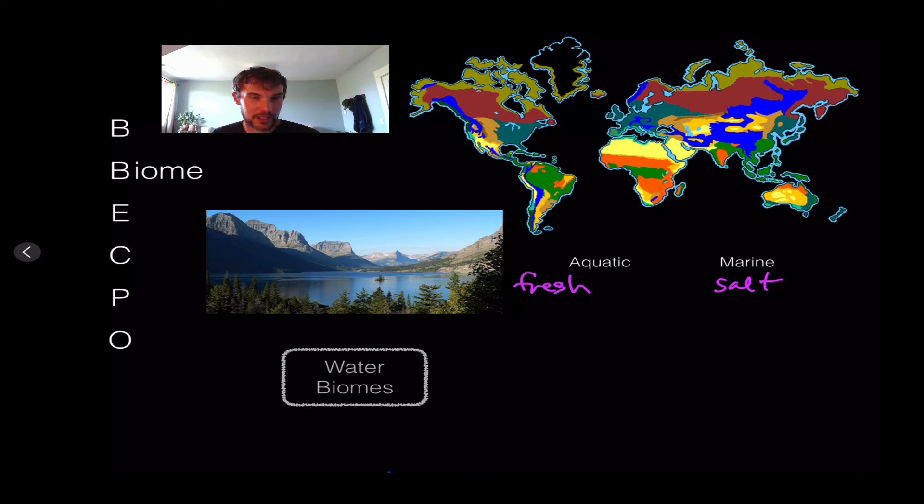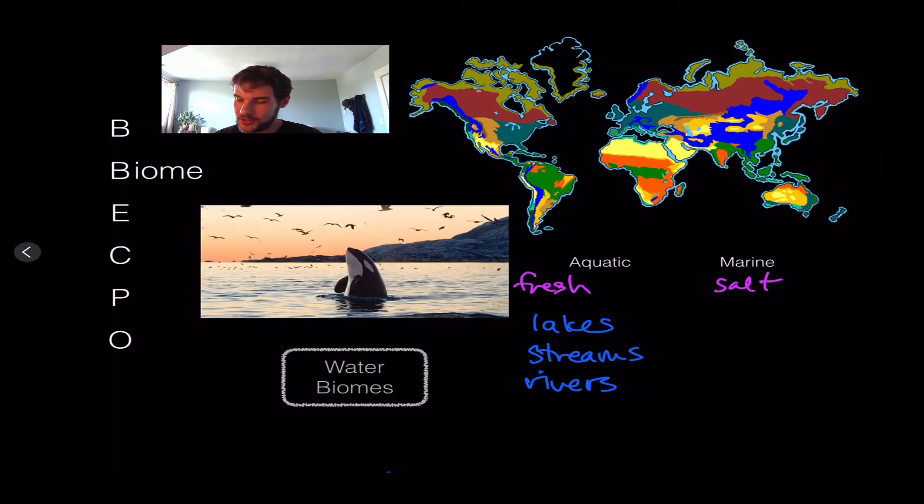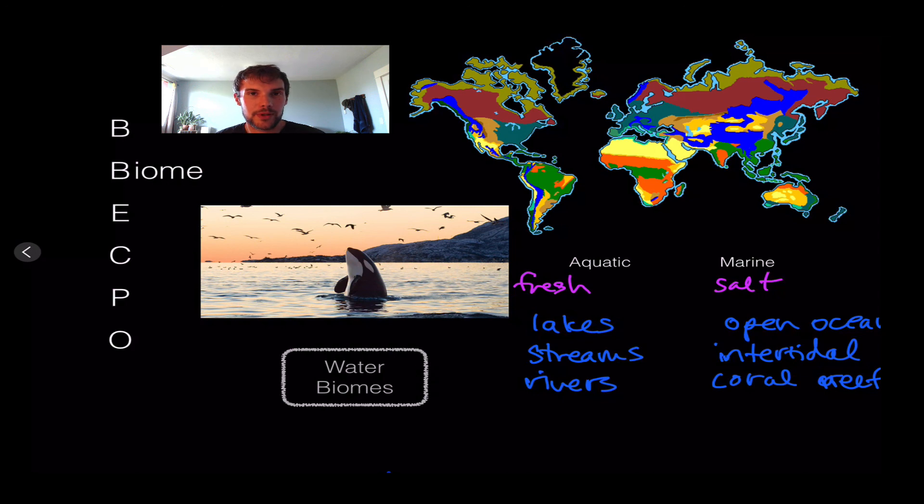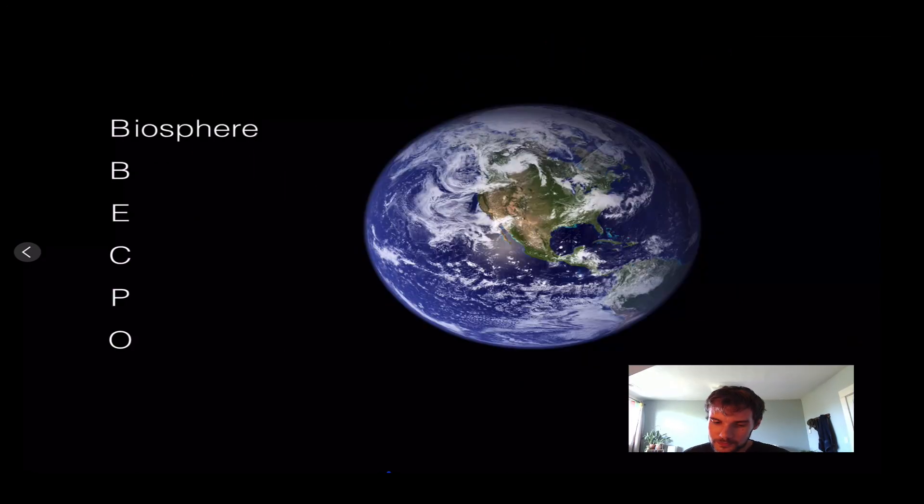Lakes, streams, and rivers are included in freshwater biomes. Marine areas include open ocean and intertidal areas - where you see little creatures when you lift rocks. Coral reefs are a good example of a marine biome.